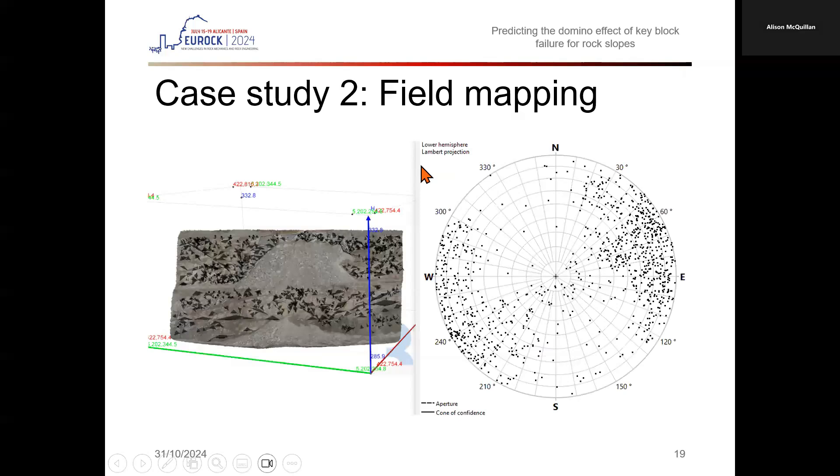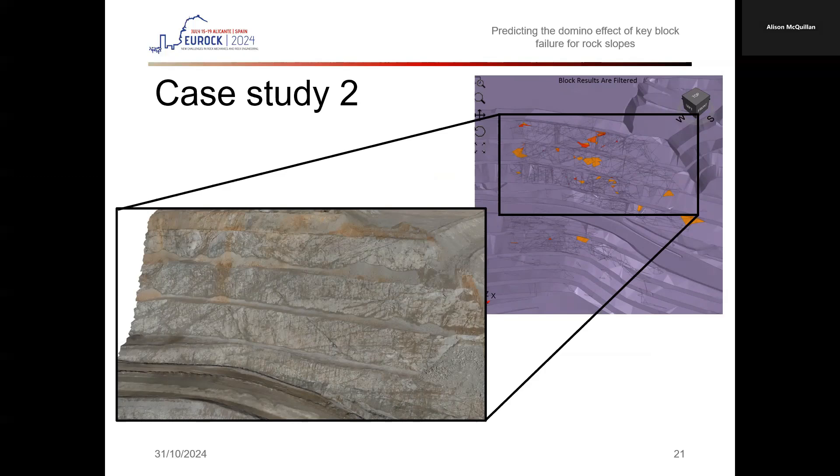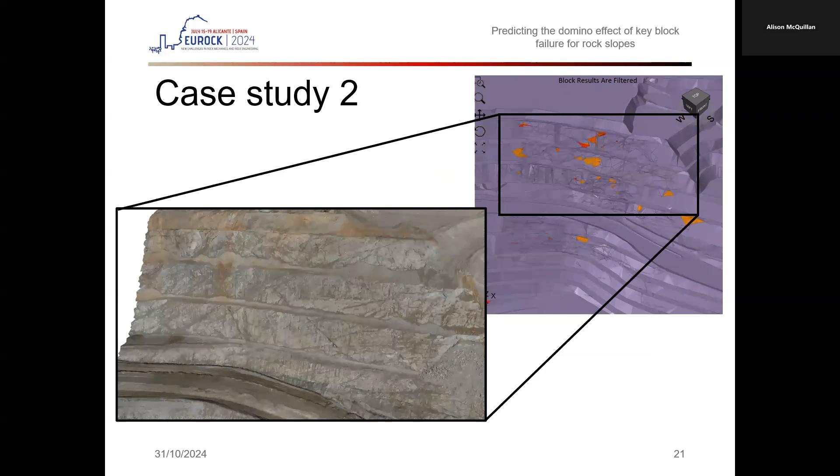Moving to a second case study discussed in the paper, face mapping was completed using aerial photogrammetry and ShapeMetriX software to determine the intensity of defects and likely stability of a subsequent pit wall cutback. Again, using RockSlope 3, structural mapping was analyzed to determine valid and key blocks based on the true spatial location of measured defects.